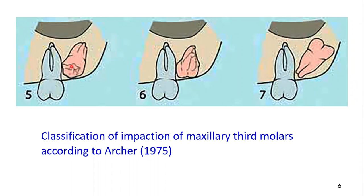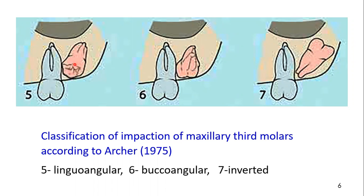Here you can see a linguoversion — the crown is clearly visible in this diagram and the crown is towards the palatal side. You can see a palatal version or linguoversion, a palatal angular or linguoangular.